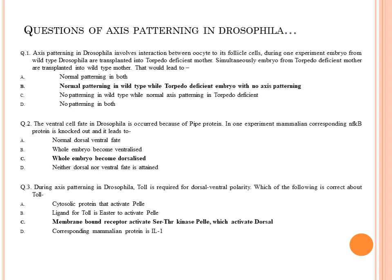Next question: the ventral cell fate in Drosophila is occurred because of pipe protein. In one experiment, mammalian corresponding NF-κB protein is knocked out — and it leads to? NF-κB एक mammalian protein होती है जो dorsal protein के लिए homologous होती है। Dorsal protein is responsible for ventralization। तो अगर ऐसी protein जो dorsal की homologous है उसे knocked out कर दें, तो पूरा embryo dorsalized हो जाएगा क्योंकि ventral structure बनेगा ही नहीं। इसलिए option C — whole embryo will become dorsalized — will be the right answer।